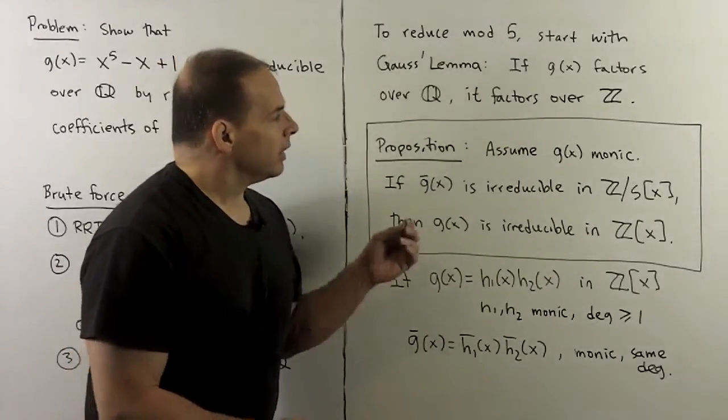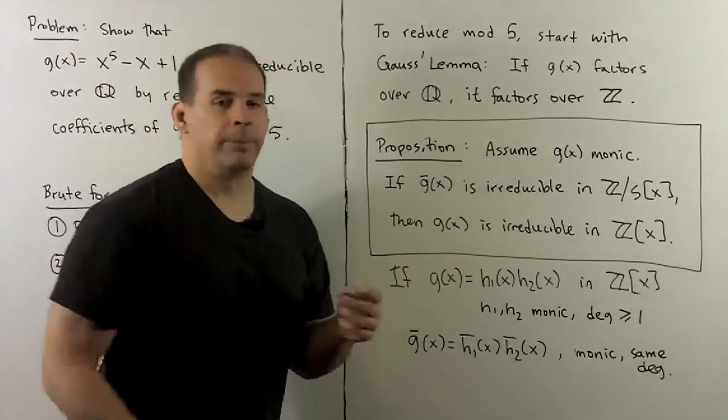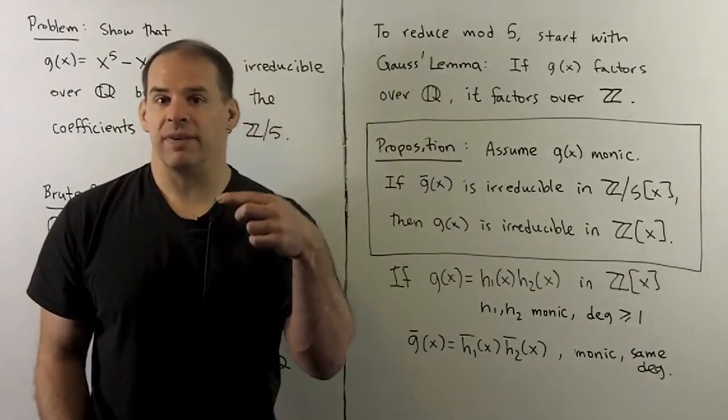So proposition, we'll assume that g is monic, so that way when we reduce, the lead term doesn't vanish.